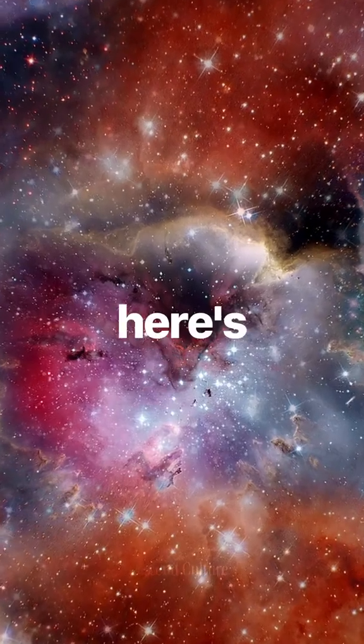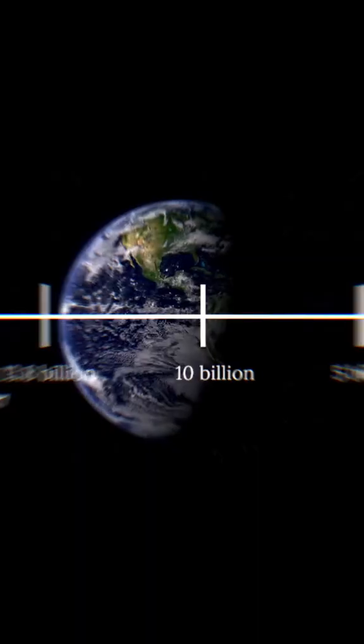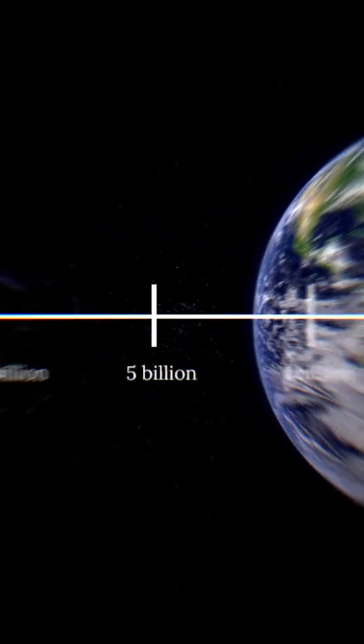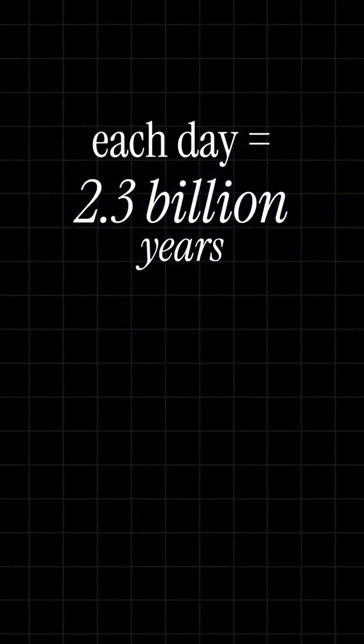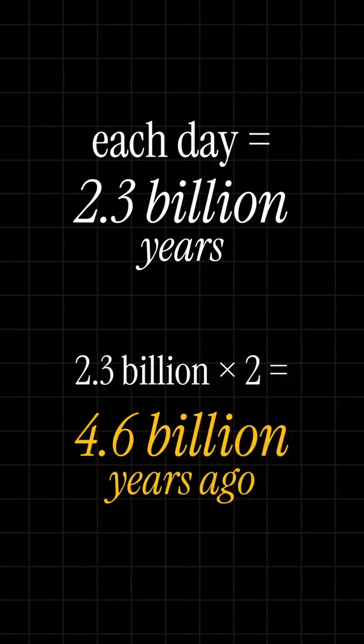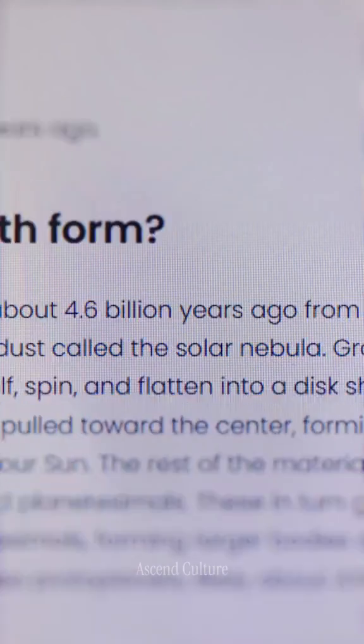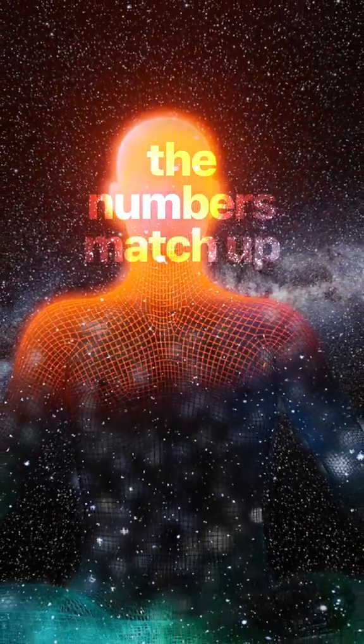Now, here's where it gets almost too perfect. Some scriptures describe the Earth itself forming around the second day. If each day is 2.3 billion years, then the Earth would have started forming about 4.6 billion years ago, which is exactly what science tells us. The numbers match up almost perfectly.